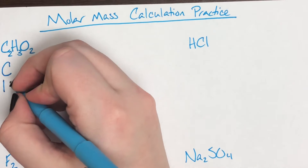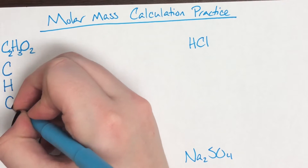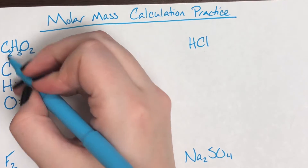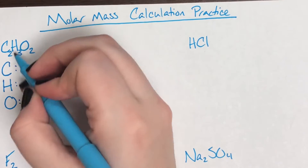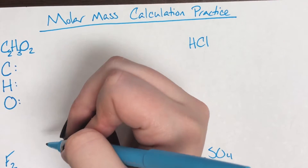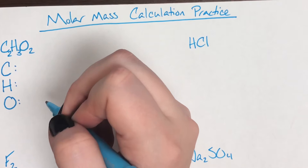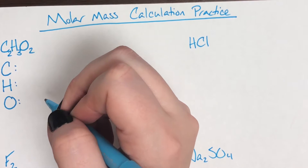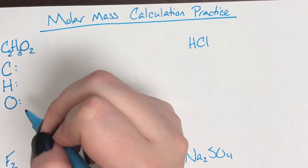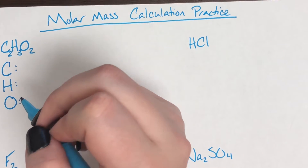Everything that is a capital letter is going to be a separate element. So we have C — that's carbon. We have H — hydrogen. O — oxygen. Now I have everything listed out, everybody that's actually in the compound, and I can go ahead and look at my periodic table to find the masses of each element.